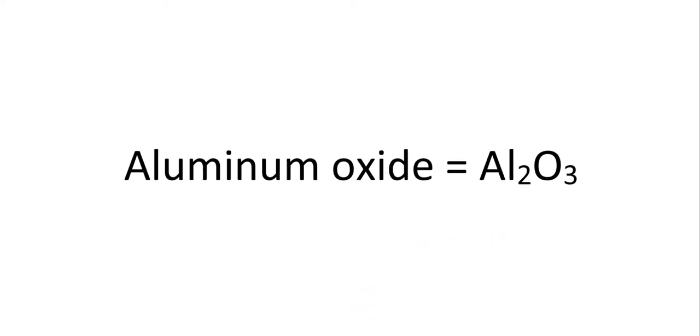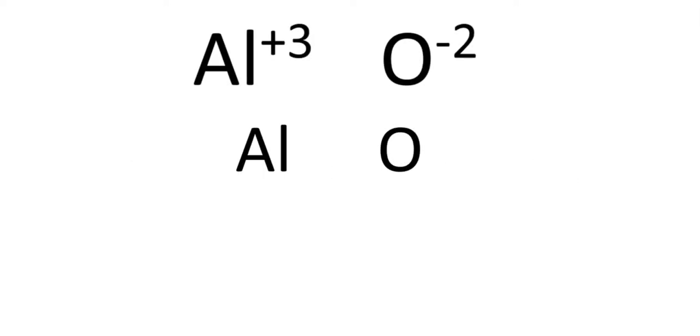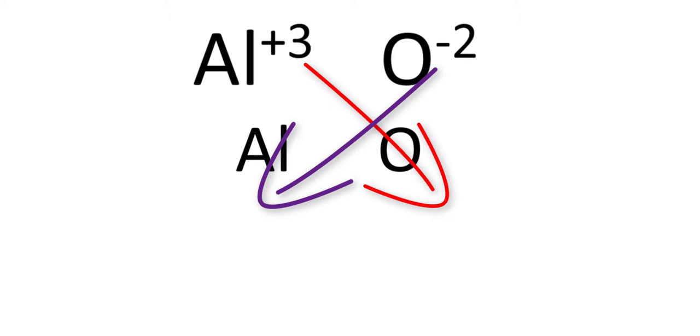Let's use another example aluminum oxide and go over the crossover method. For this method the superscript of the aluminum cation +3 becomes the subscript of the anion oxide. The superscript of the anion oxide 2- becomes the subscript of the aluminum cation.